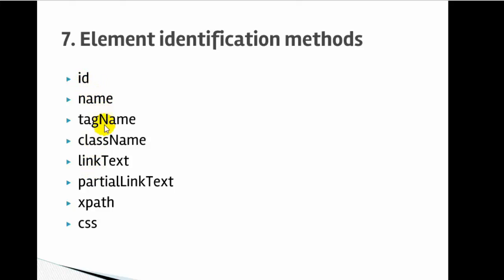Using id, name, tag name, and class name, these element locators are very easy and simple. You just inspect the elements and then find the elements which have those attributes. For example, if you want to identify an element which has the id attribute, you can use the id element locator. Similarly, if the element has the name attribute, you can use the name locator, and if it has the class attribute, you can use class name. Tag name is used to identify elements using the HTML tag name.